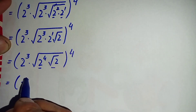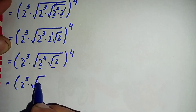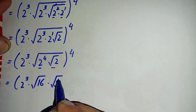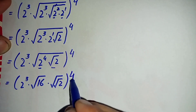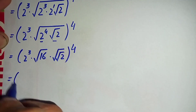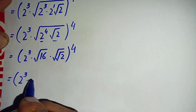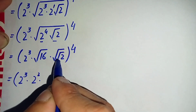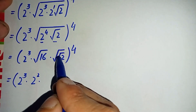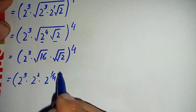So two raised to power three times square root of two raised to power four — but two raised to power four is equal to 16 — times square root of square root of two, whole raised to power four. In the next step we will simplify this square root of 16, which is equal to 4. So this will become two raised to power three times 4, and we can write 4 as two raised to power two. Here this square root is equivalent to half or one over two, so there are two times two square roots of two. By multiplying one over two two times you will get one over four, so it will become two raised to power one over four, whole raised to power four.